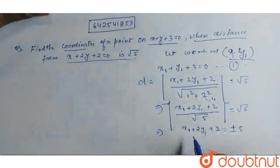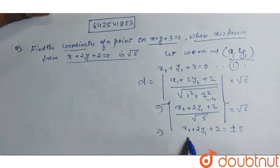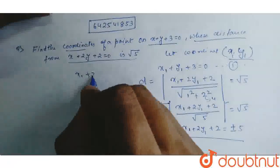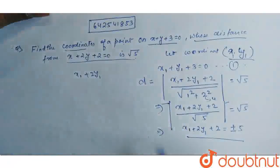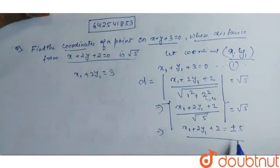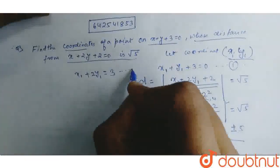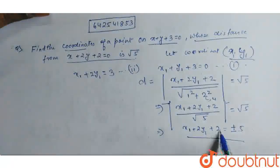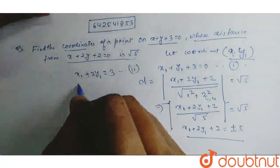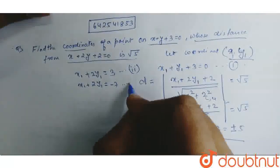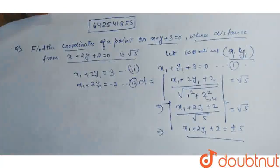So, here we get two equations. Here we get x1 plus 2y1 equal to 3. This will be the second equation and third equation is, for minus, x1 plus 2y1 equal to minus 7.